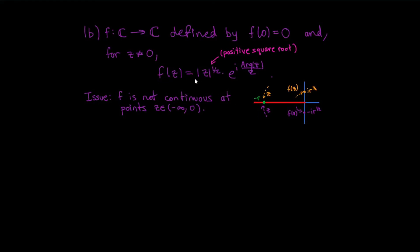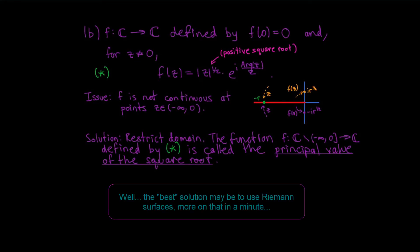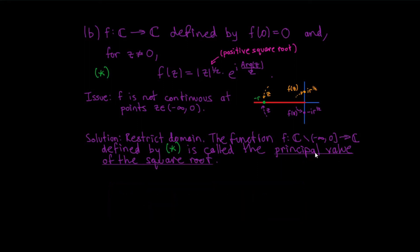Even if you try to redefine f using a different choice of arguments, you're always going to run into the problem that there's at least one line where the function is not continuous. So the best solution is to restrict the domain. If we restrict the domain by throwing away the negative real axis and 0, then what we get is called the principal value of the square root.